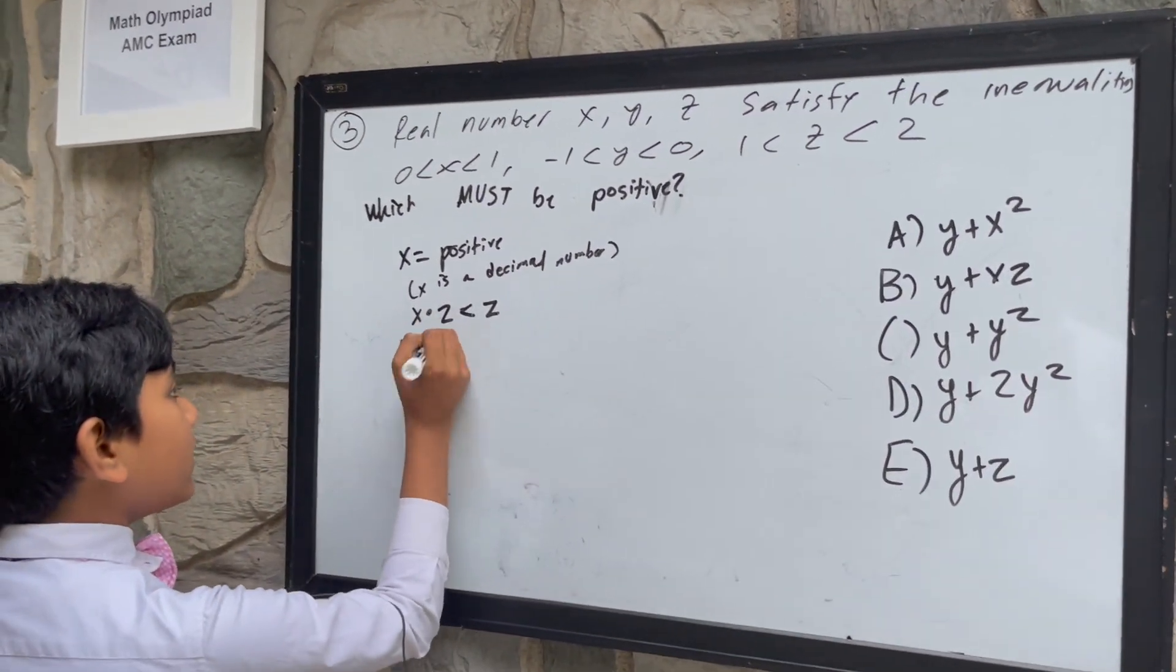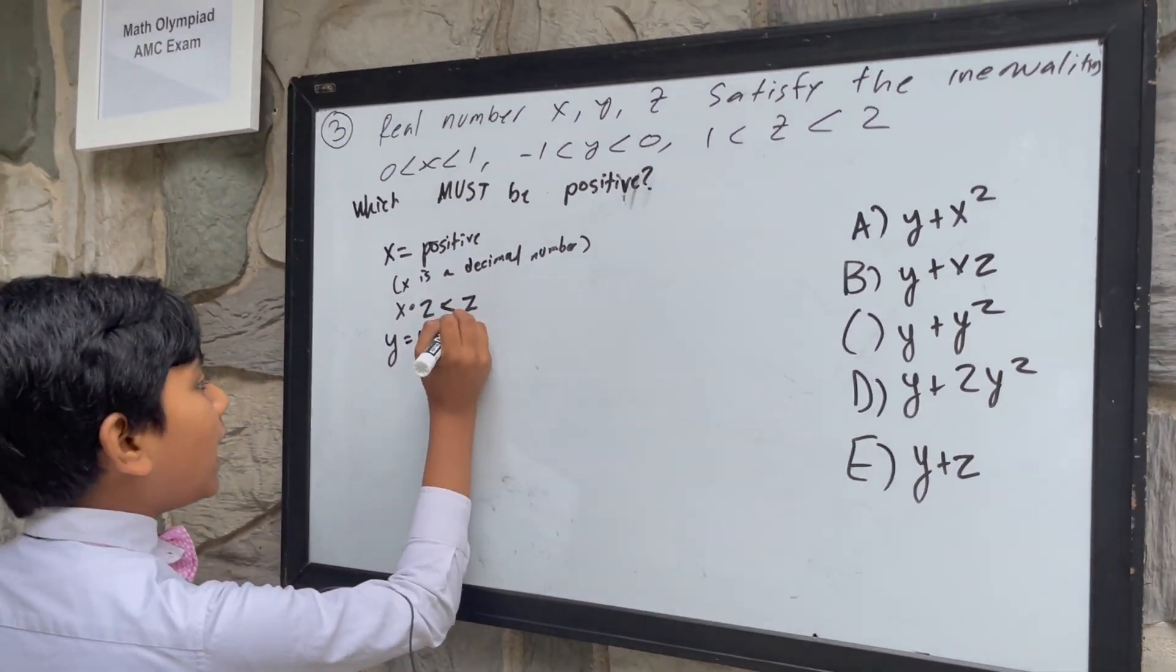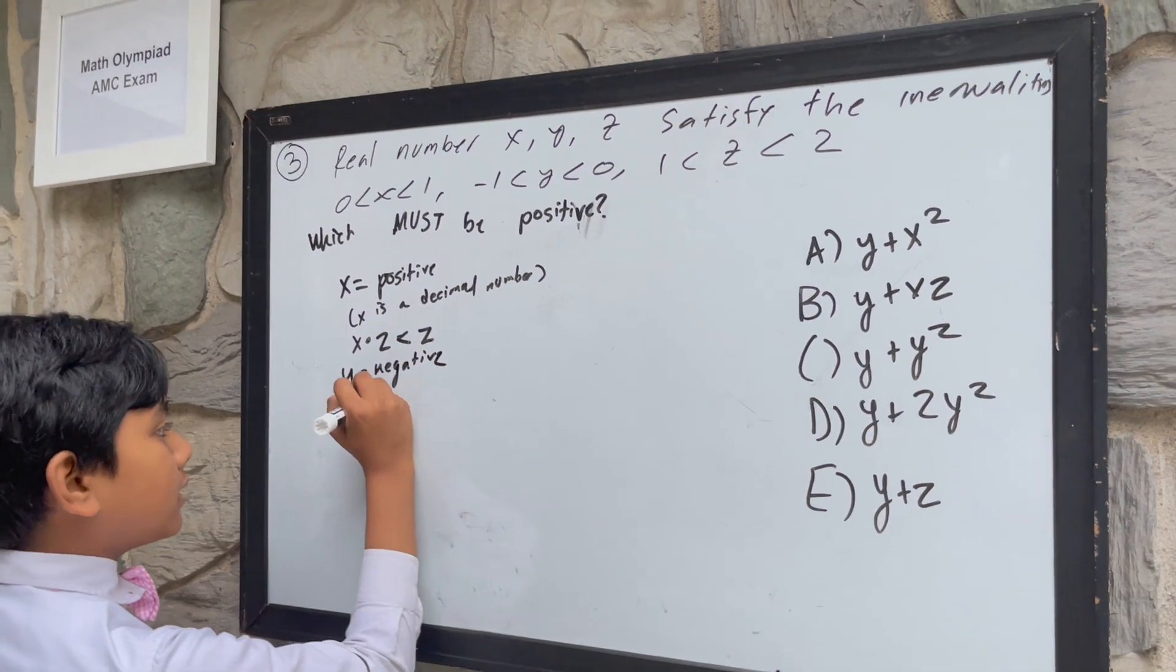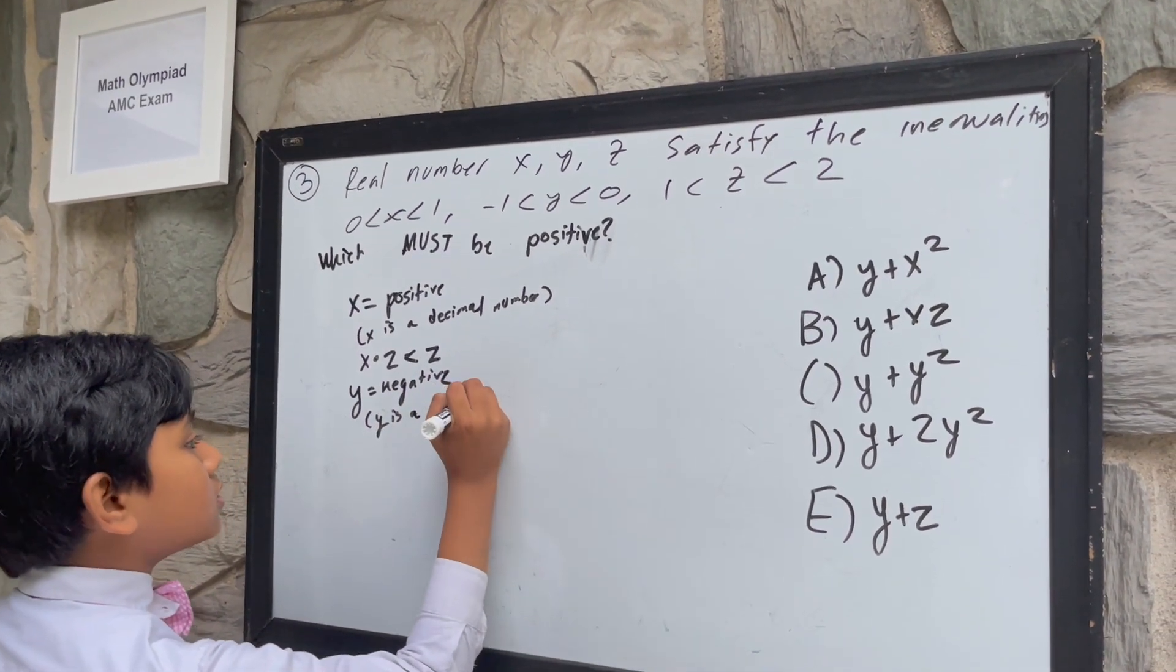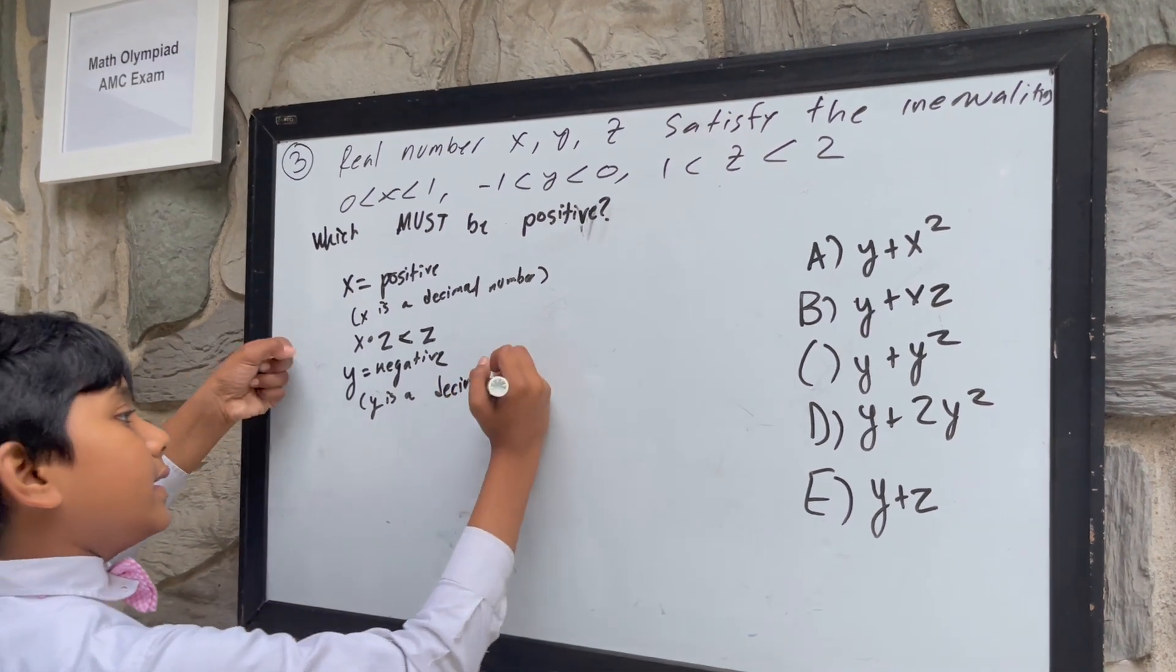Y is negative, but y is also a decimal number. I've already given an explanation here above.